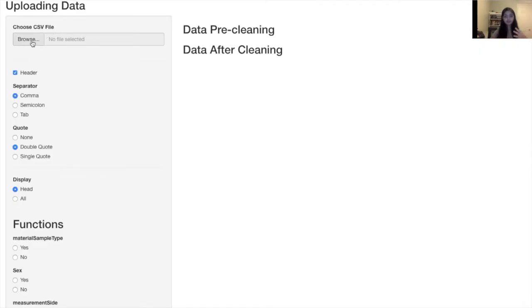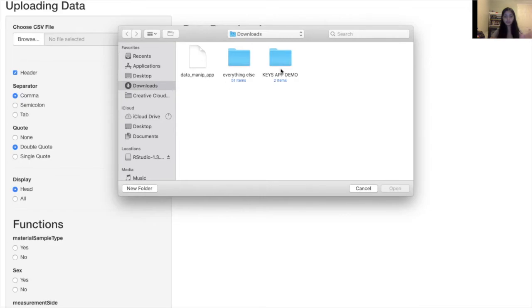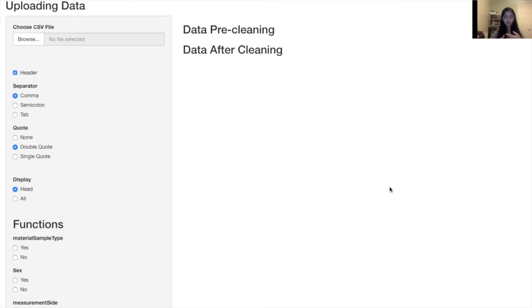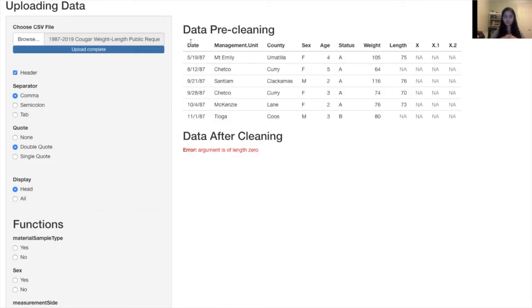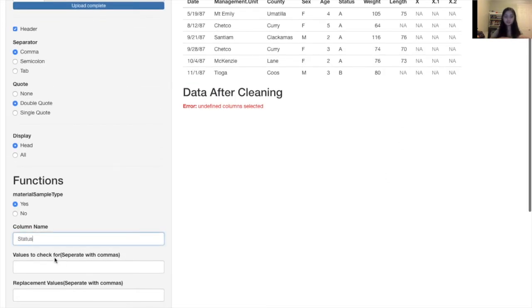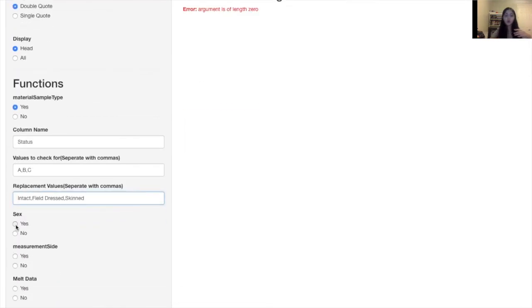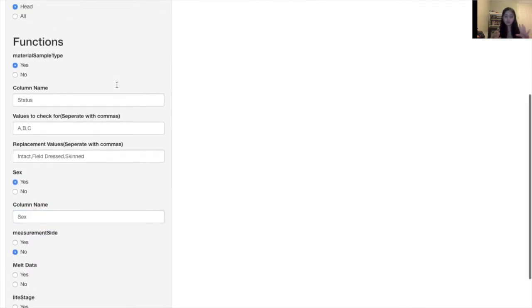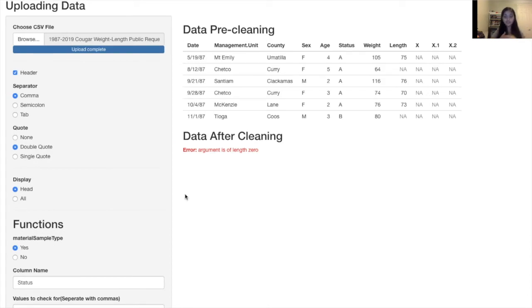So, this is a demo of my app. Basically, on the left, you can upload a data frame and then once that's been uploaded, it'll show up under data pre-cleaning. And then you can go down, change the settings of how that data is being presented and you can also select what functions you want to apply to that data frame.